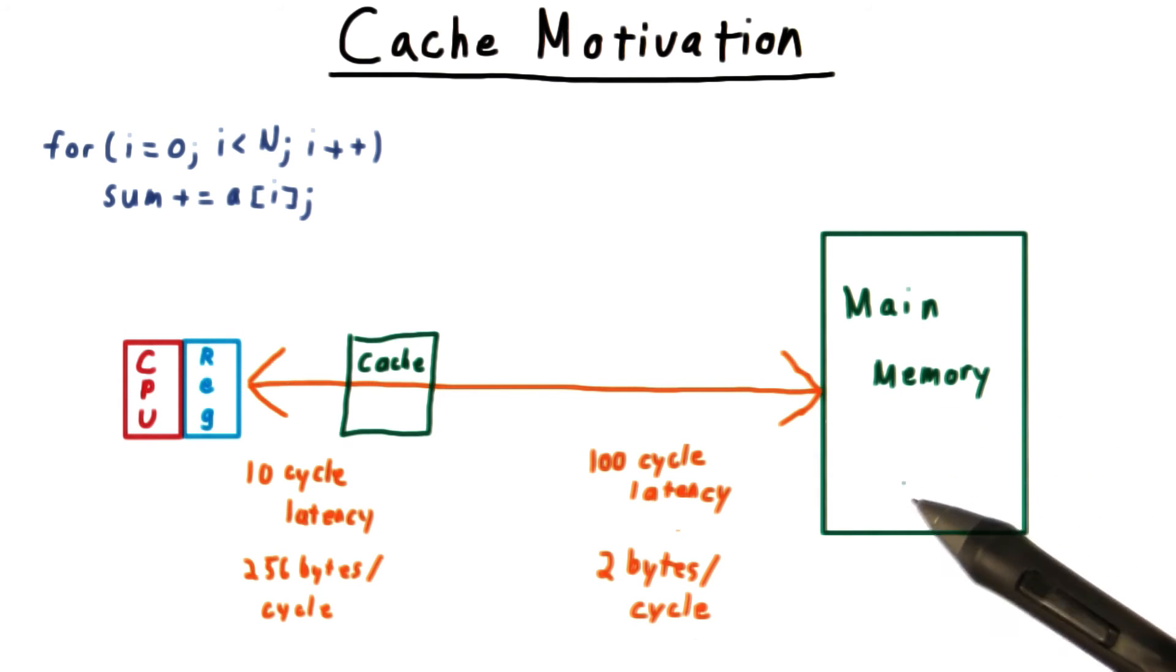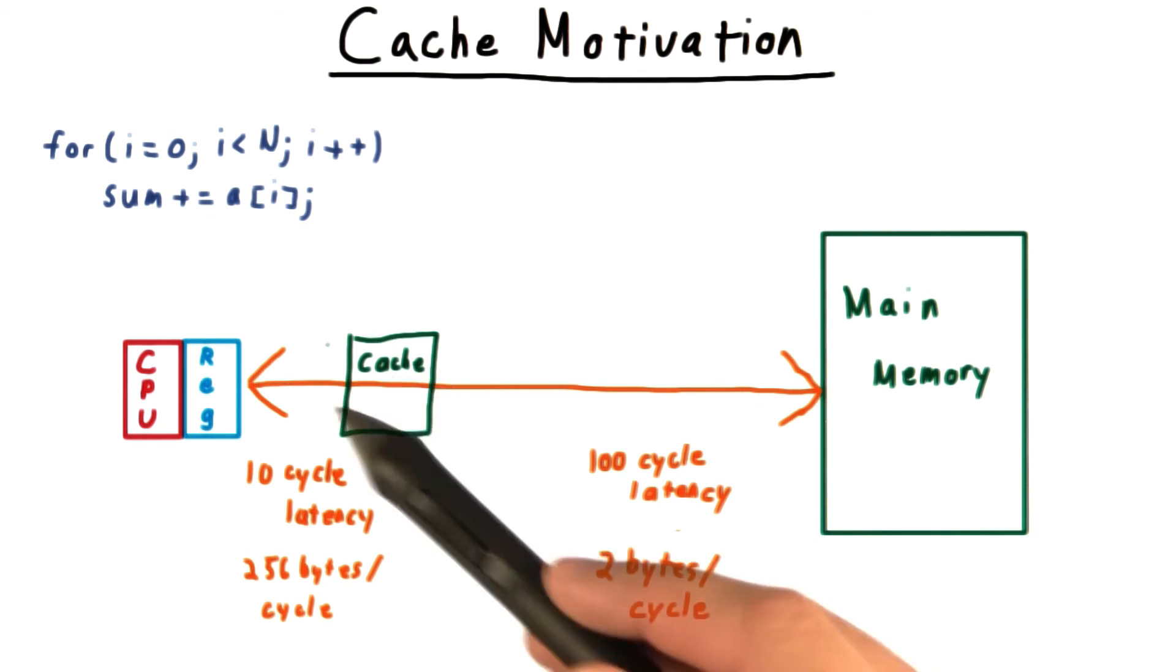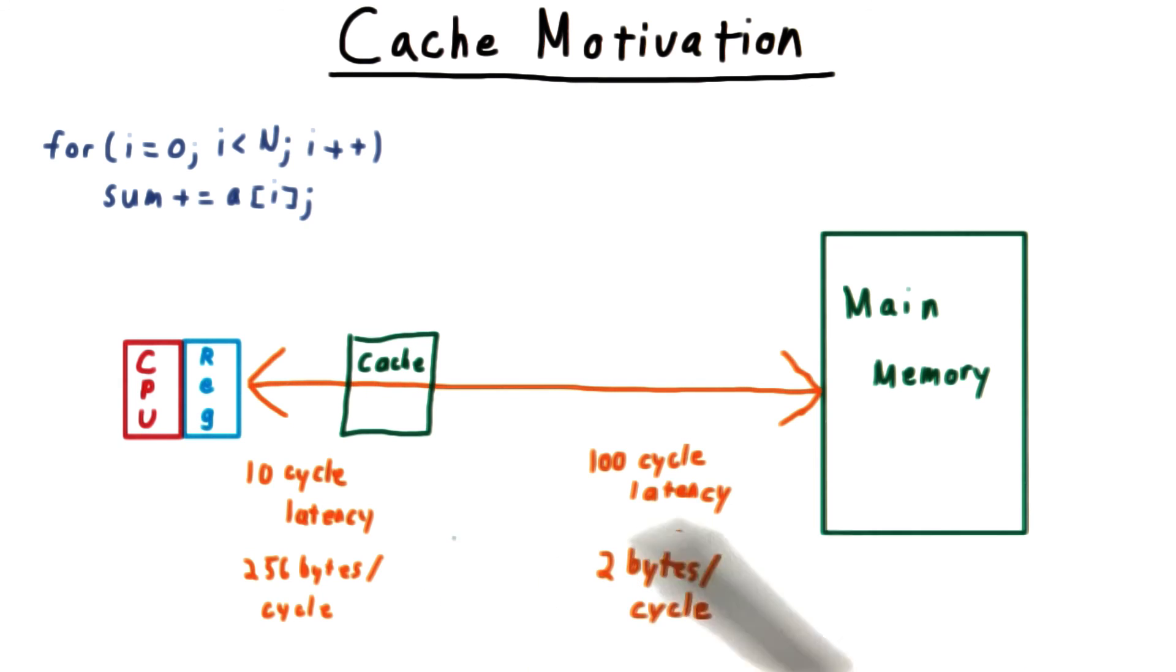The key is keeping these cache misses infrequent, so that on average, time spent accessing is more like the time it takes to access the cache, than it is like the time to access main memory.